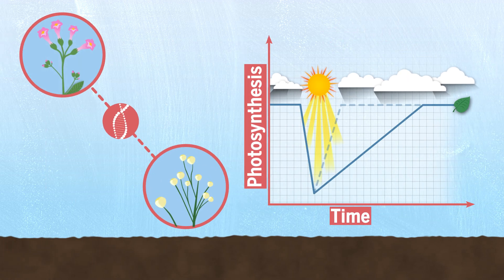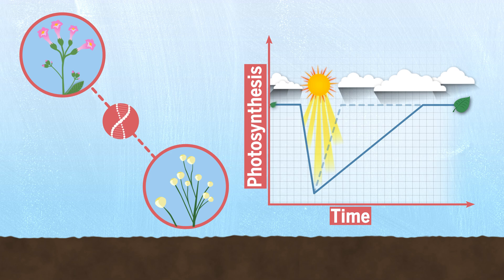By swapping a few genes from one plant to another, they were able to change photosynthetic recovery time.